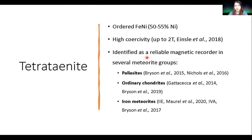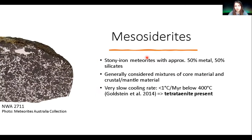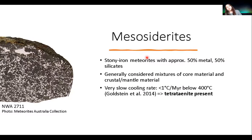One meteorite group known to contain abundant tetrataenite but not on this list is the mesosiderites. Mesosiderites are stony-iron meteorites with approximately equal parts metal and silicate. They're generally considered to be mixtures of core material and crustal or mantle material, probably involving some kind of impact in their history — though this is not very well understood. Crucially, they have an extremely slow cooling rate — the slowest of any known rock — less than one degree per million years, meaning tetrataenite is present in quite large amounts.